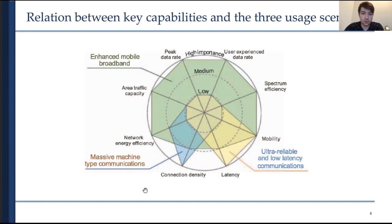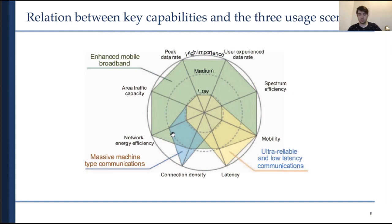This chart shows how those KPIs are important for different use cases. For eMBB, energy efficiency, area traffic capacity, data rate, experienced data rate, spectrum efficiency, and mobility are of high importance, while latency and connection density are less important. For machine type communications, increased energy efficiency and connection density are key — the 'massive' in MMTC. For URLLC, very low latency and high mobility are critical, while data rates are of less importance.